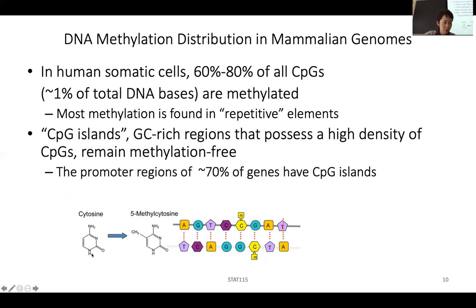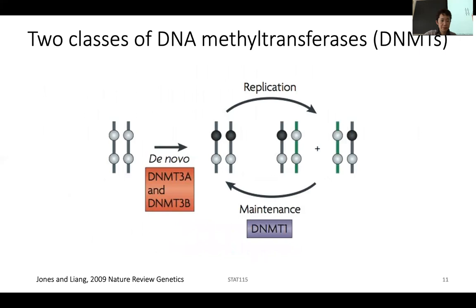Once a C is methylated, it's usually a symmetric reaction. If a C is followed by a G on one strand, the reverse strand also has a C followed by a G. Methylation usually happens symmetrically on both strands at those C positions. There are two types of DNA methylation: one is de novo. We always have two copies of the DNA — one from the mom, one from the dad.